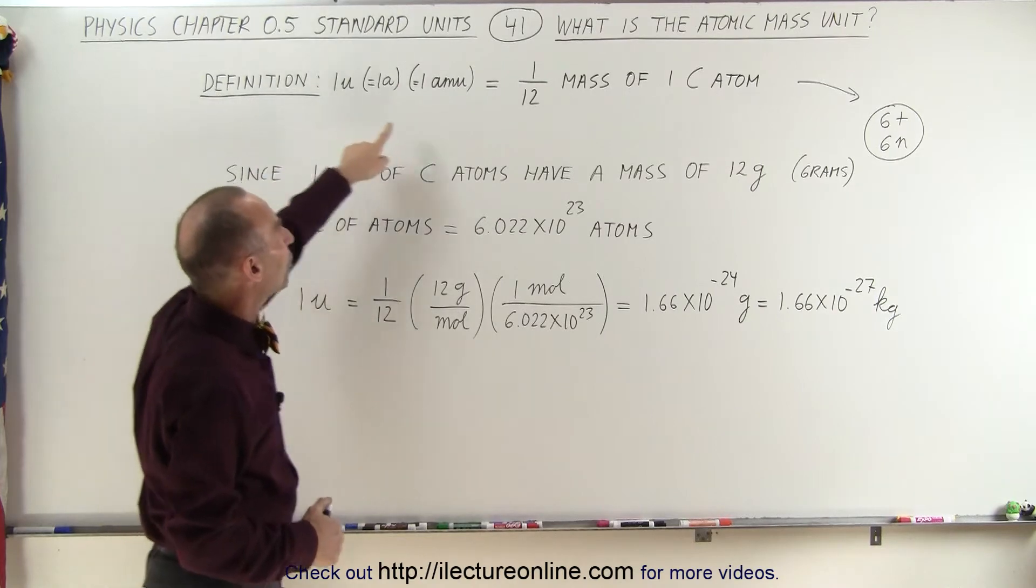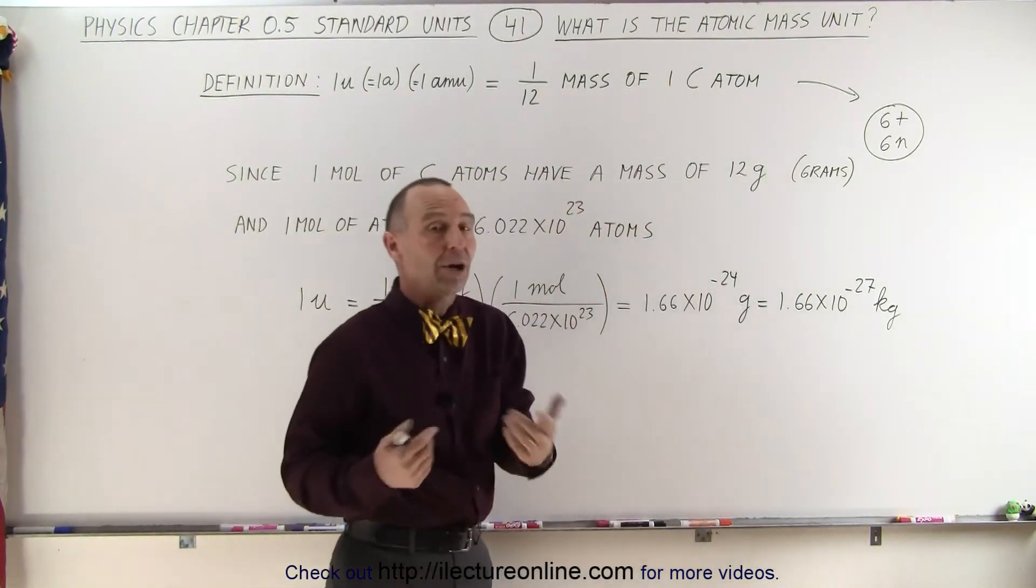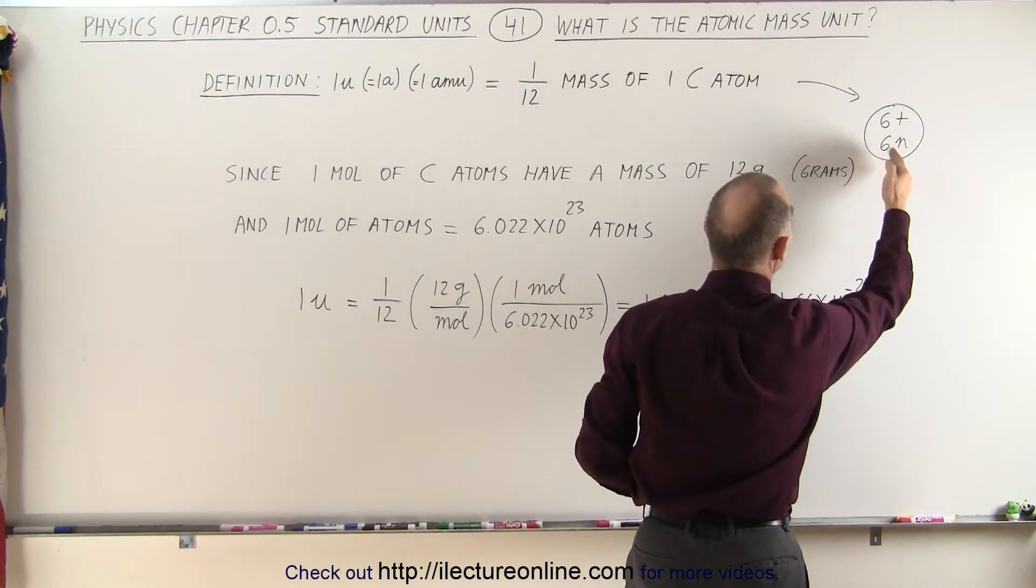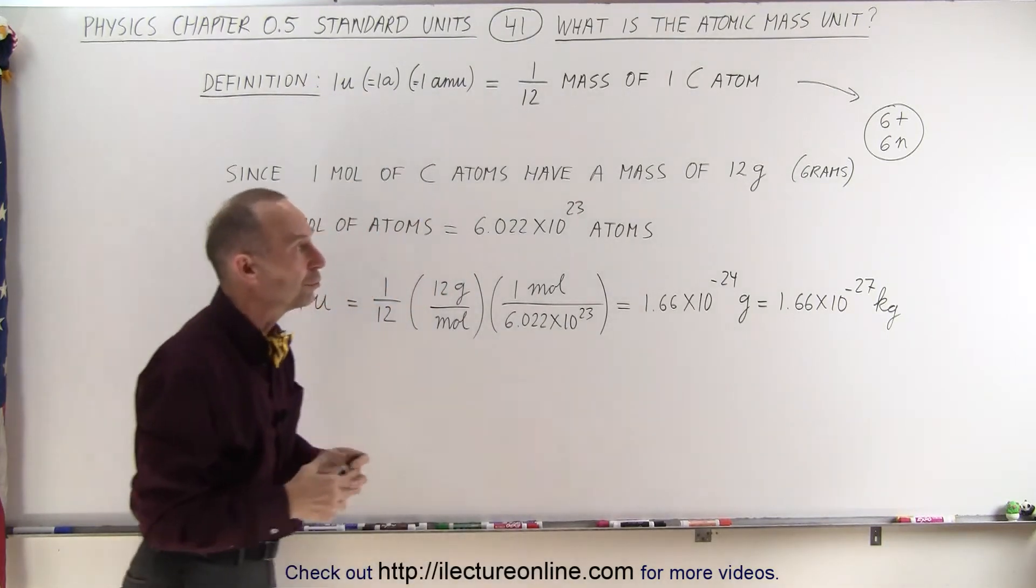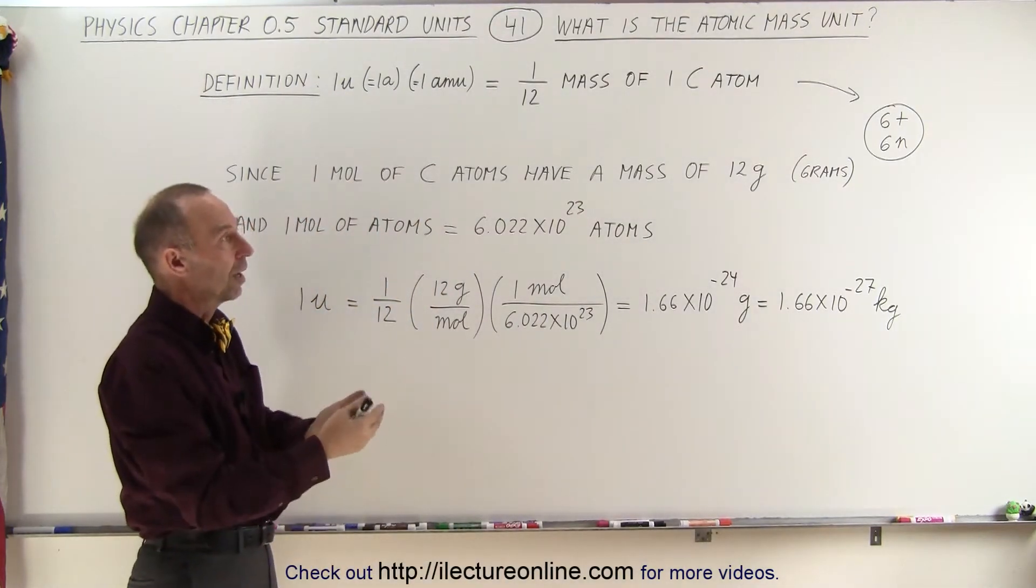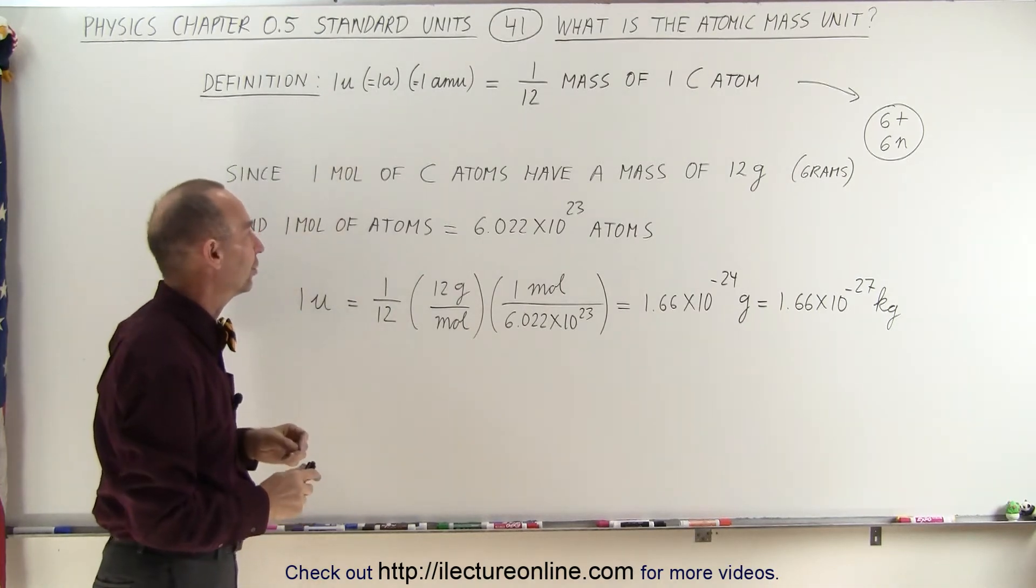It's defined to be 1/12 the mass of one carbon atom, because a carbon atom has 6 protons and 6 neutrons, and in that configuration, the average mass of those 12 nucleons, 6 protons and 6 neutrons, have an average mass of 1 atomic mass unit.